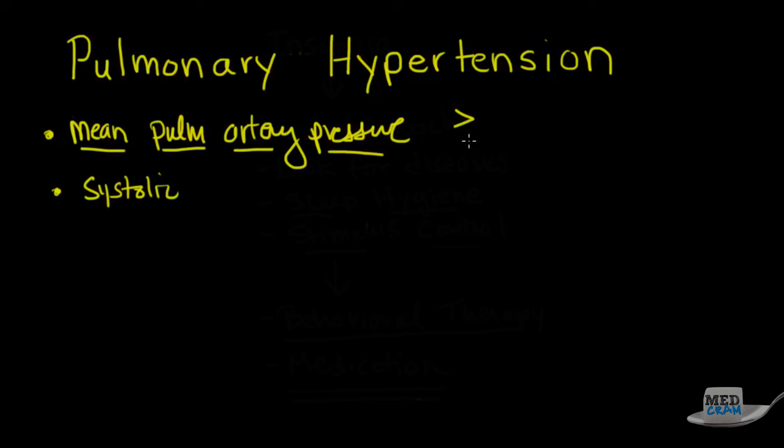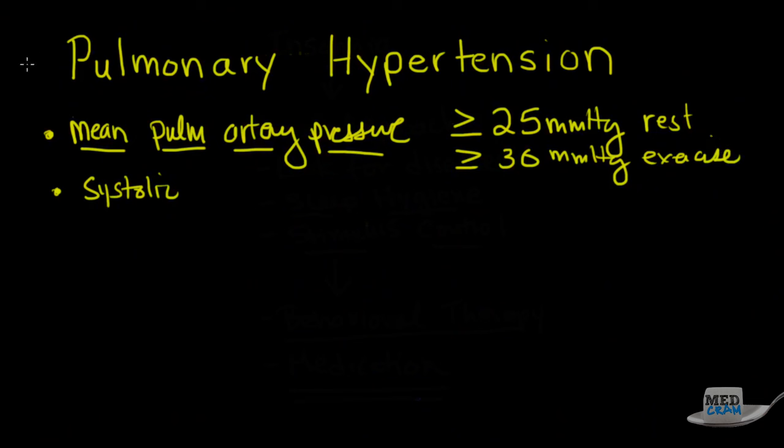Generally speaking, if it is greater than or equal to 25 millimeters of mercury at rest, or greater than or equal to 30 millimeters of mercury at exercise, that will meet the criteria for you having pulmonary hypertension.